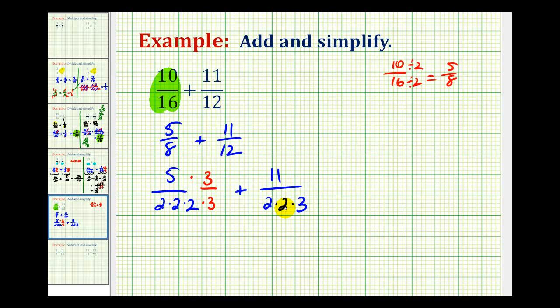Now looking at this denominator here, we can ask what factors is this one missing that this one has. Well notice how this denominator has 3 factors of 2 and this one only has 2. So we need to multiply this denominator by another factor of 2, and then of course the same in the numerator.